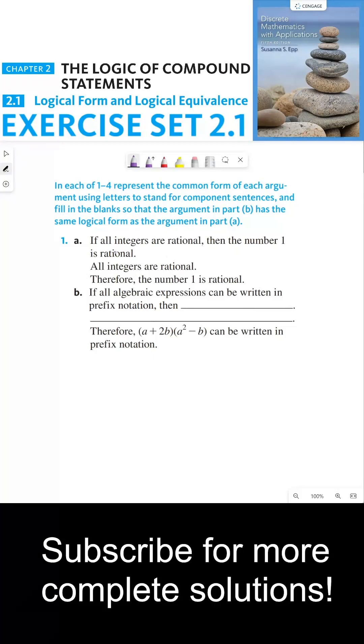The logic of part a is different than the content of part a. The content here talks about rational integers and the number one, whereas part b doesn't talk anything about that.